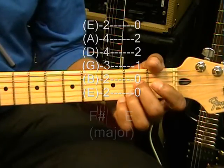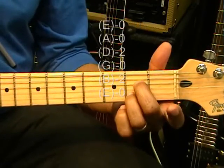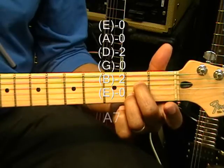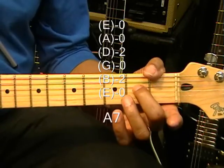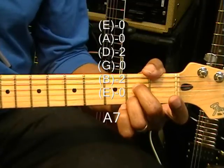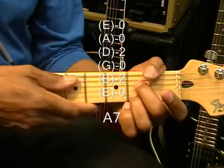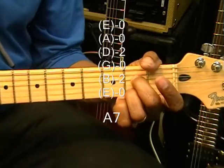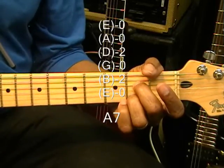A7. We've got our middle finger on the D string 2nd fret, and the ring finger on the B string 2nd fret. Strumming that from the A string. That's A7.